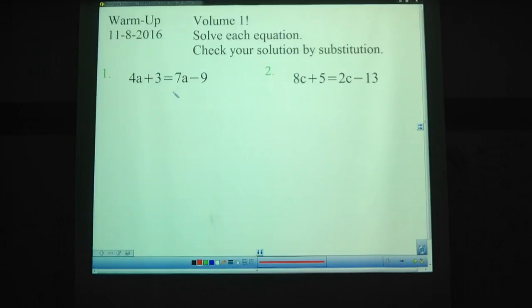So, 4a plus 3 equals 7a minus 9. Pause the video and try these out. Okay, we're back. 4a plus 3 equals 7a minus 9.